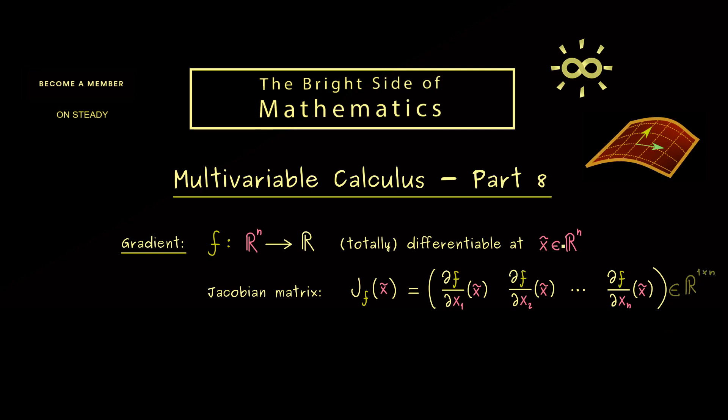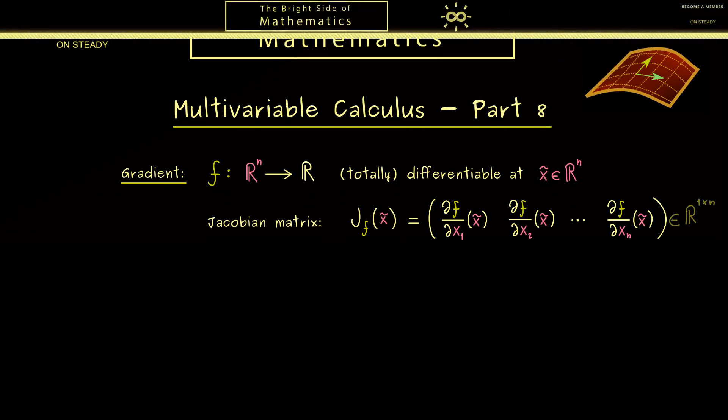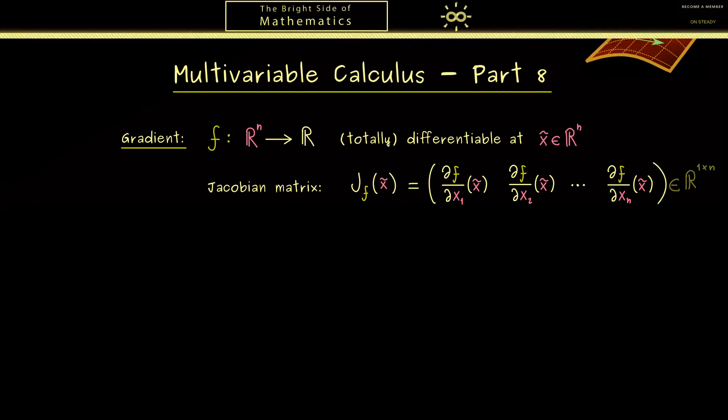In other words what we find here is a matrix with only one row but n columns. So it's a very flat matrix because the values of the function are just one dimensional. And therefore in this case it's possible to interpret this matrix as a vector.